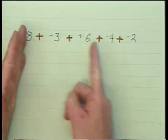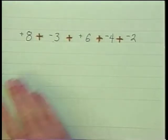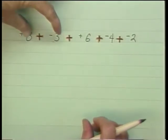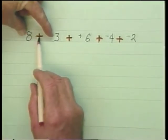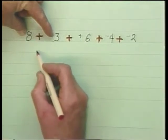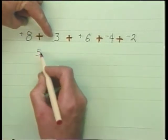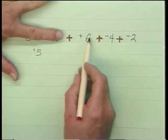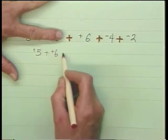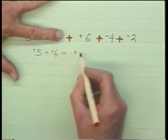Let me do this straightforward from front to back. The signs are different, so I take the difference of the absolute values, smaller from the larger — 3 from 8 is 5. Give the sign of the one with the larger absolute value, which is plus. So this portion gets replaced by plus 5. Now I'm going to add it to plus 6. The signs are alike, so they stay alike and I add the absolute values.